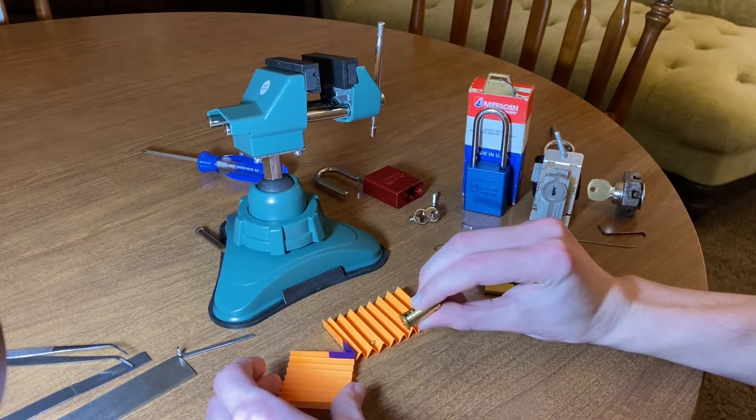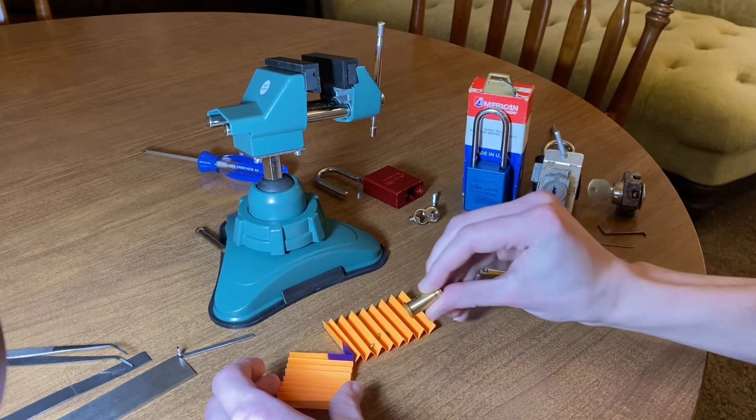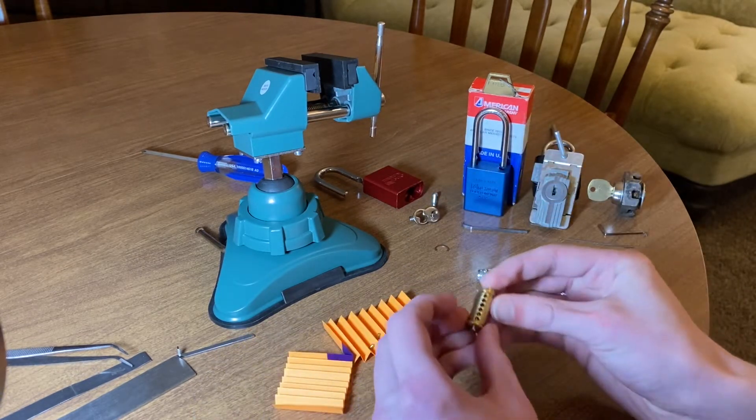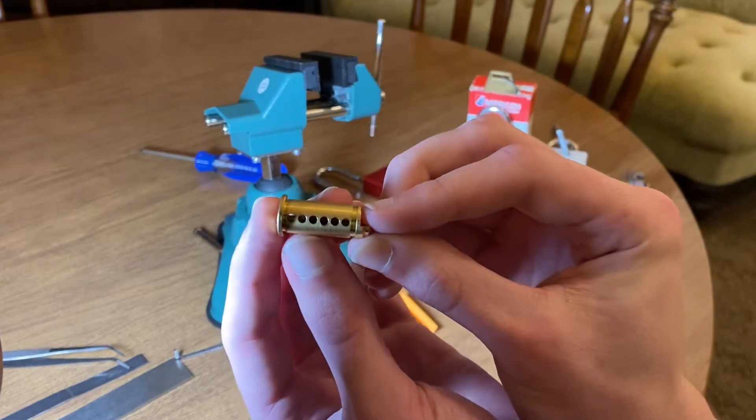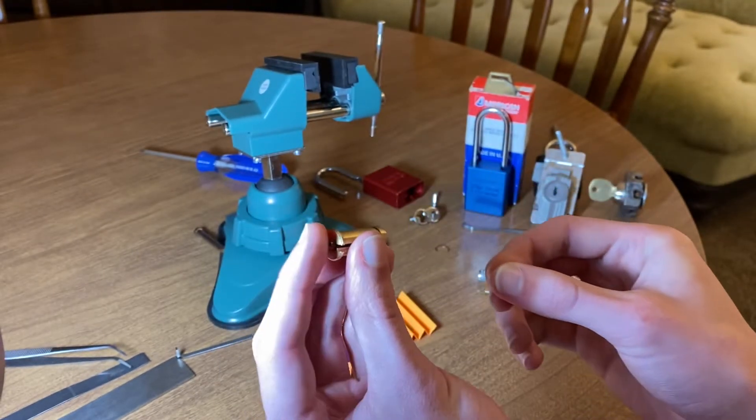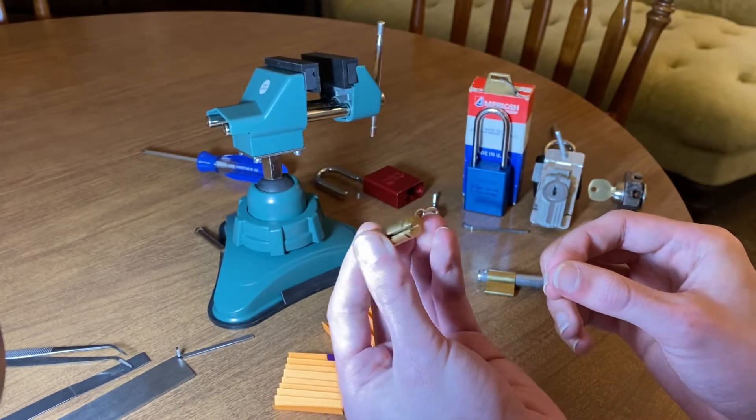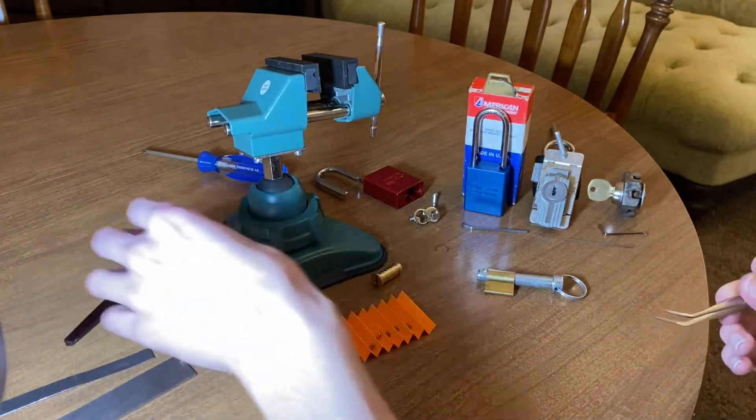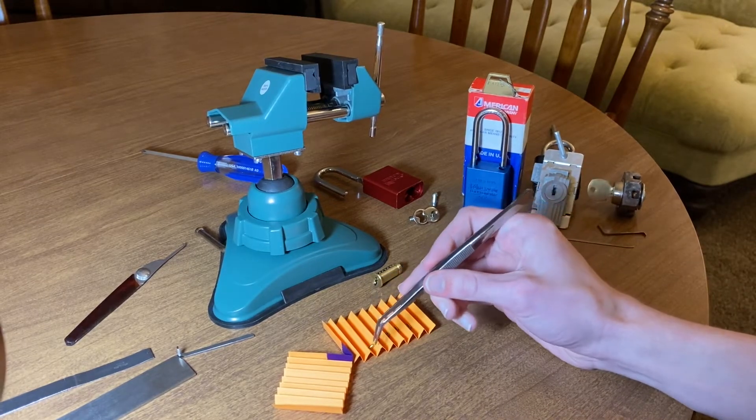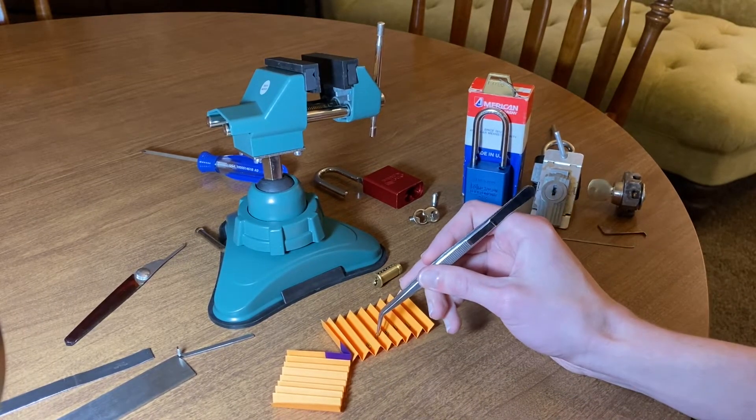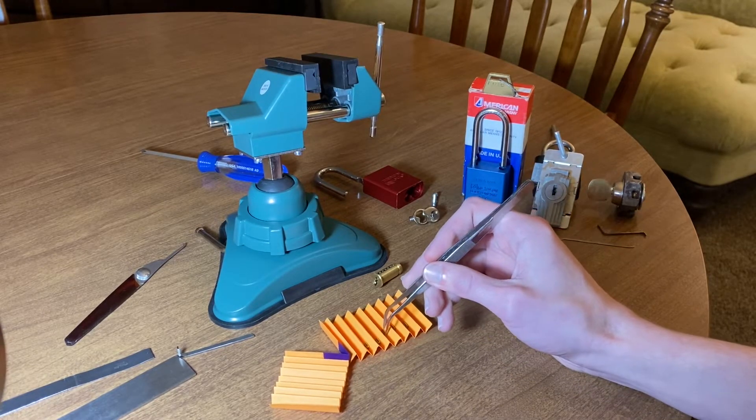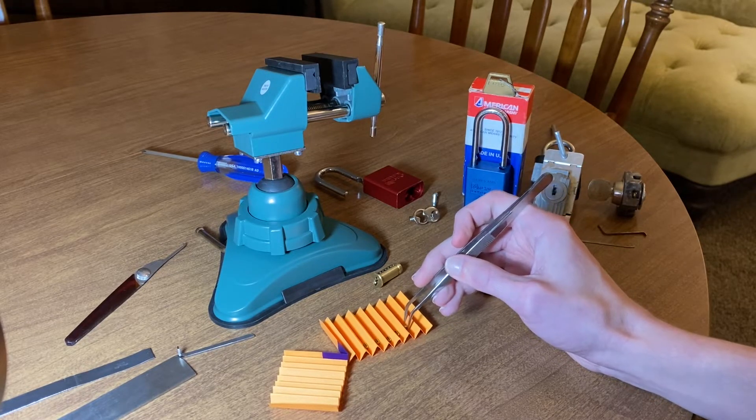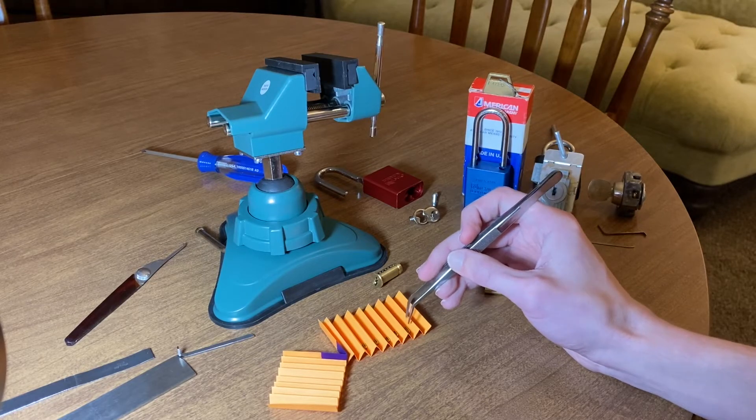Pins number one, two, three, four, five. There's the core. Nothing much to it. It's an American lock core. Rearrange these a bit with my tweezers. Turn that over.